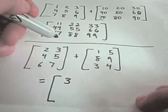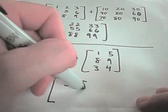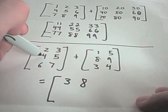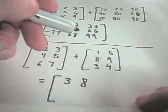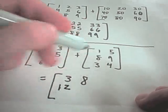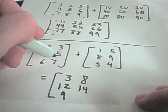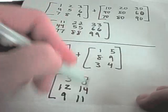2 plus 1 will give you 3. Top right plus top right. 3 plus 5 will give you 8. The first entry in the second row plus the first entry in the second row. That's 4 plus 8. That'll give you 12. 5 plus 9 is 14. 6 plus 3 is 9. And 7 plus 4 is 11.